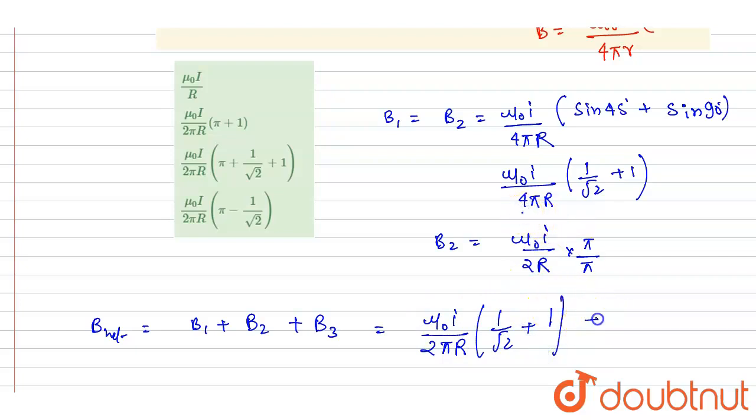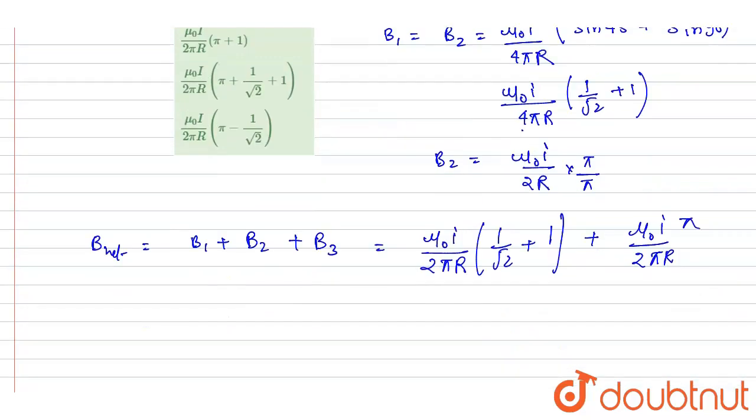So it is B1 plus B2, mu_0 I by 2 pi R into pi. Take this mu_0 I by 2 pi R common here.